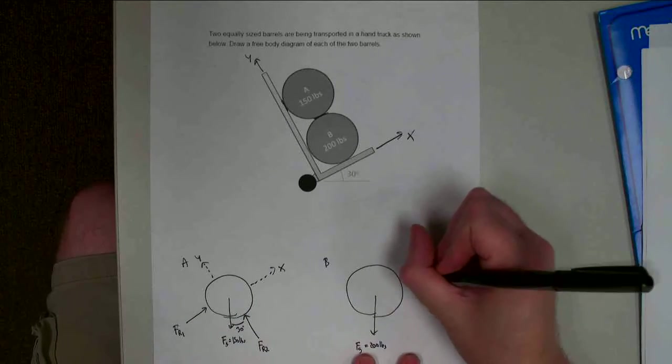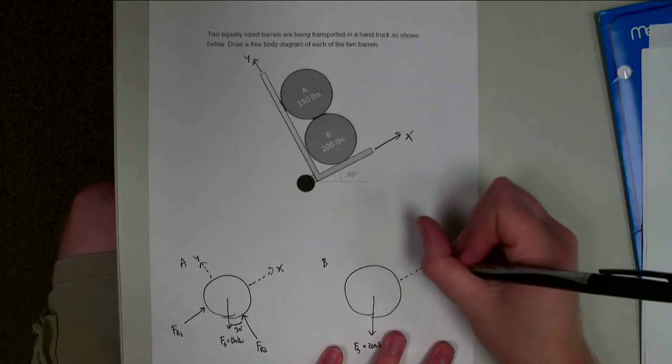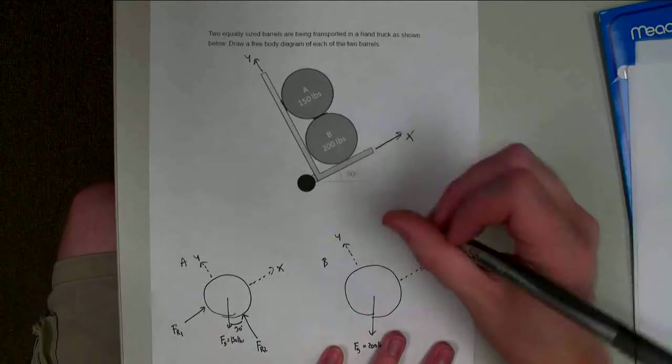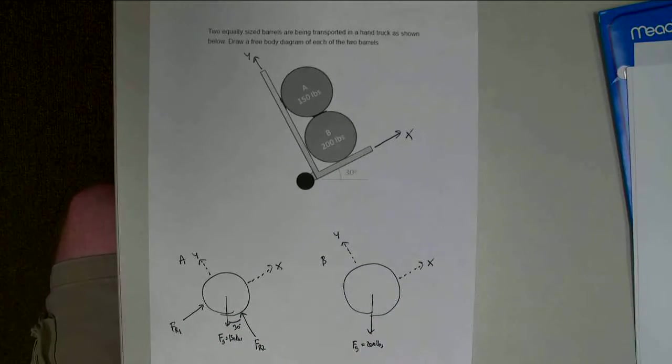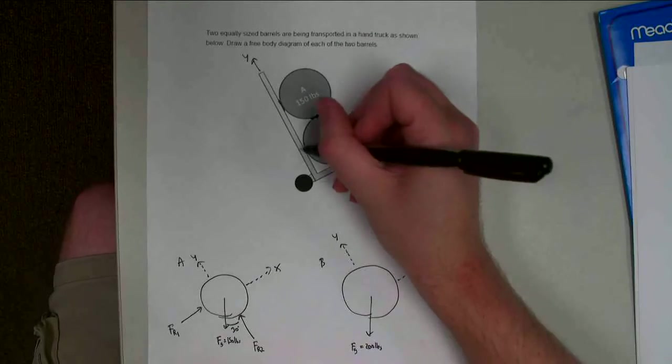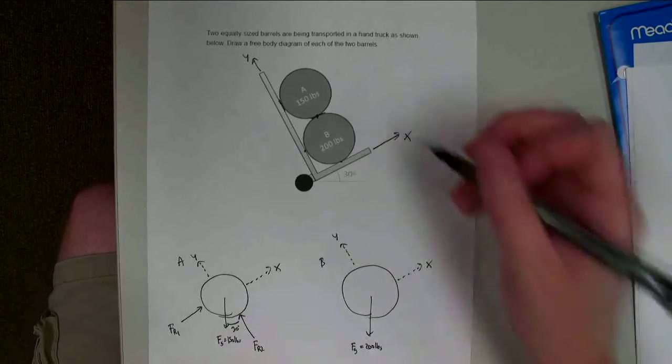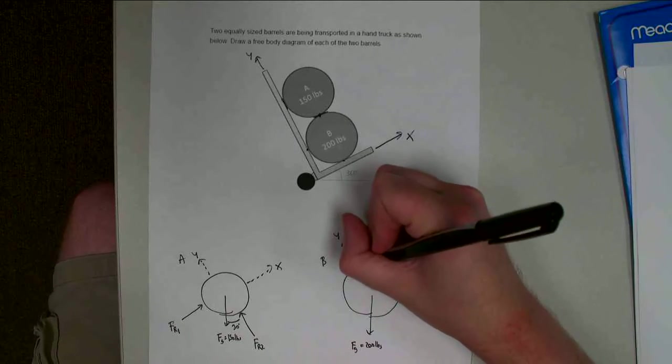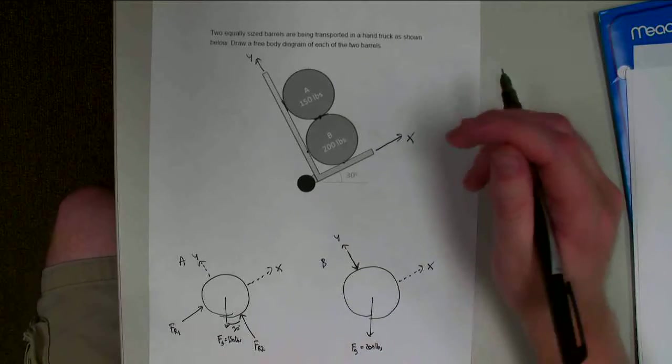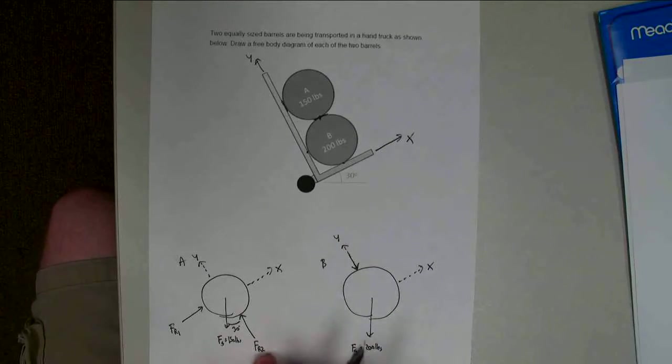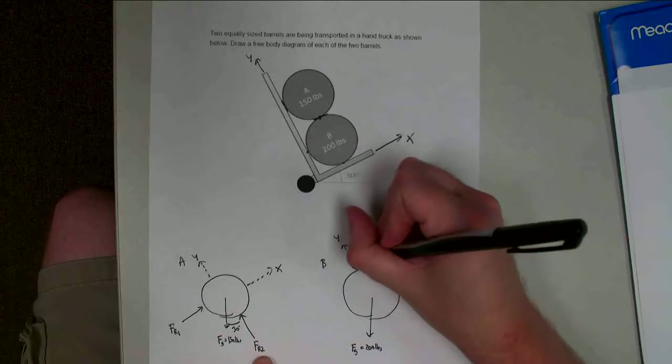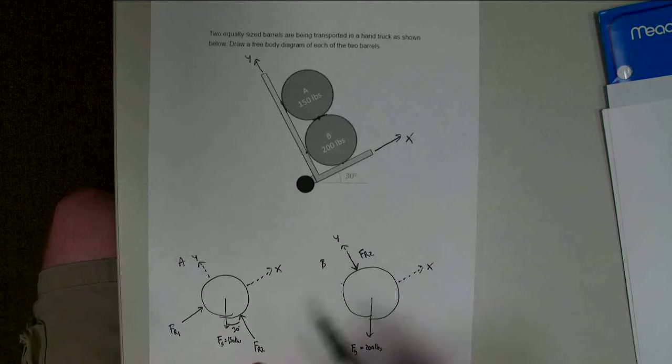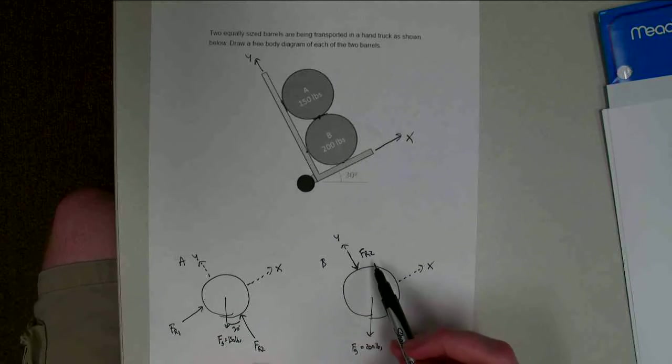All right, we're going to do the same thing over here. We're going to kind of rotate the axis a little bit and do X and Y. All right, so now on barrel B, I've got actually three points of contact. I've got the top, I've got this back, and I've got the bottom of the barrel. All right, so on the top, it's a force kind of going down in the Y direction, and it's actually the Newton's third law pair, so FR2 is the contact force. So this one is also going to be FR2. It's equal and opposite to the force I have over here. So whenever I have a contact point and two bodies in contact, I'm going to have this kind of Newton's third law pair there.